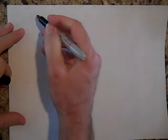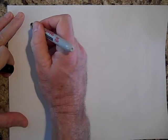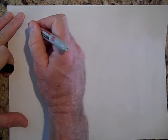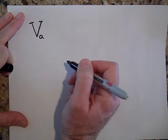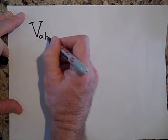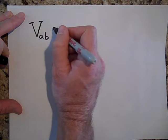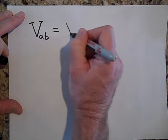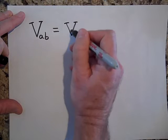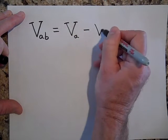But mathematically how that works out is if you want to know the voltage at A with respect to B, that's written like this. The voltage at A with respect to B, that's going to be equal to the voltage or the potential at A minus the potential at B.